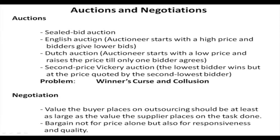In an English auction, the auctioneer starts with a high price and the bidder who gives the lowest bid is awarded the contract. In the Dutch auction, the auctioneer starts with a low price and raises it until one bidder agrees. In all these three auction types — particularly in the sealed bid auction — there is a problem known as the winner's curse, meaning the winner ultimately gives a bid higher than they could have.